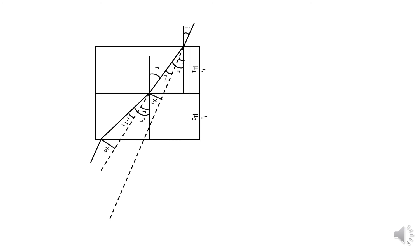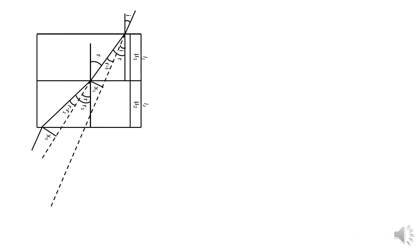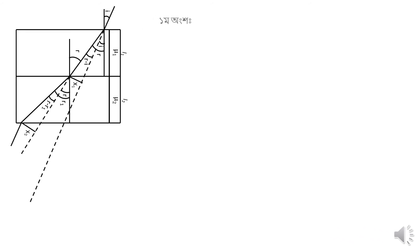So, we have to say this is the first thing. We have to say that the first slab is the first slab. We have to say x1 is d·sin(r minus i) divided by cos(i).